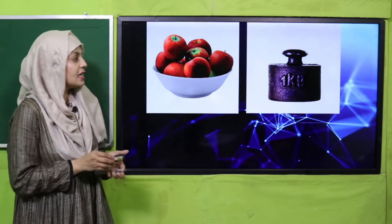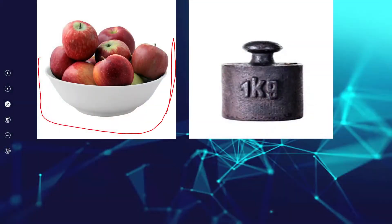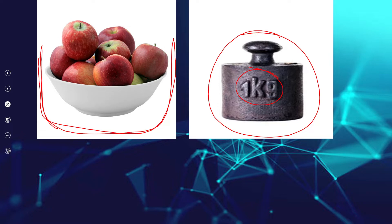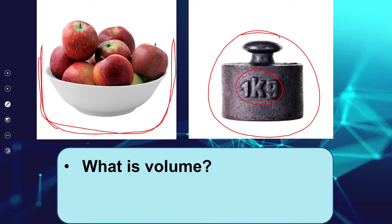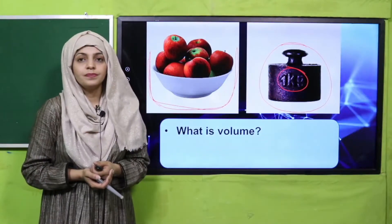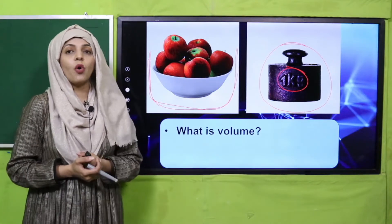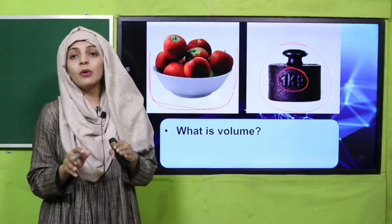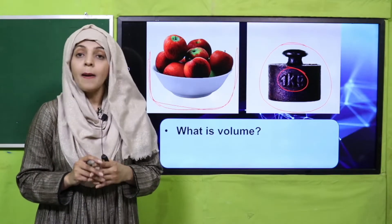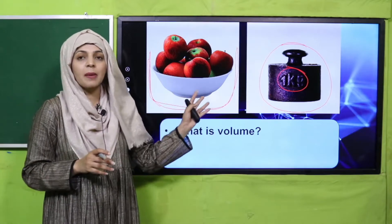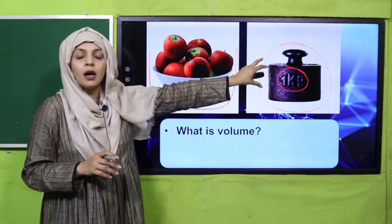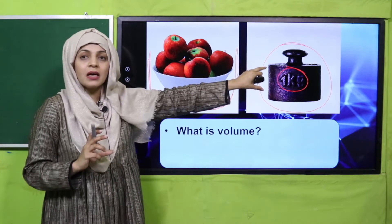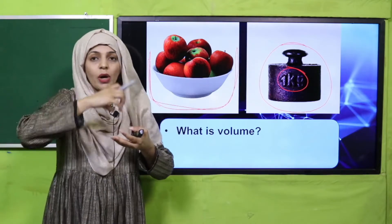Now let's quickly have a look at the activity. Here you can see these are 1 kg of apples, and this metal bar is also 1 kg, as written on it. So, is the volume of both these things the same? No, the volume is not the same. The mass of all the apples and the mass of the metal bar are the same because the amount of matter is similar.